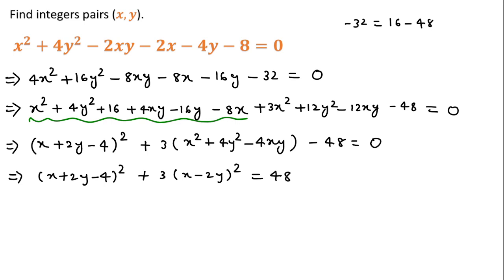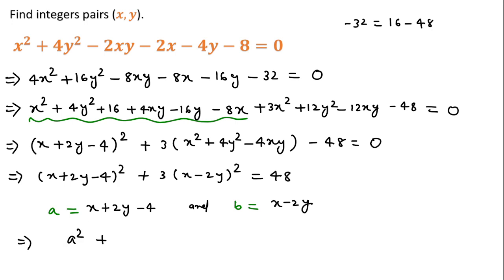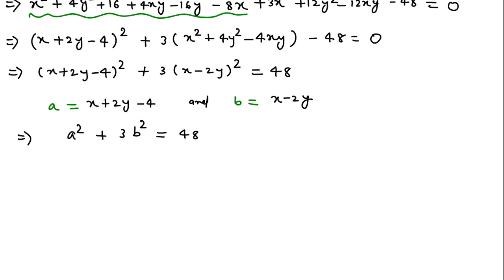Now if we consider a equal to x plus 2y minus 4, and if we consider b equal to x minus 2y, then we can write this equation as a² plus 3b² equal to 48. So now we need to find for what values of a and b this equals 48.